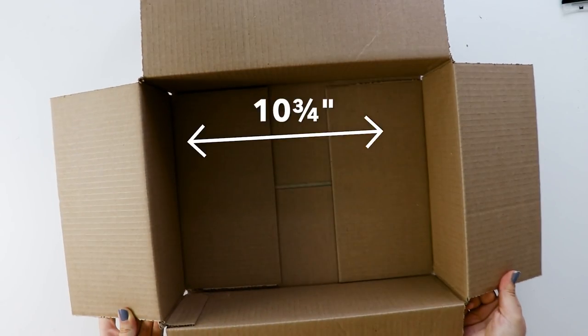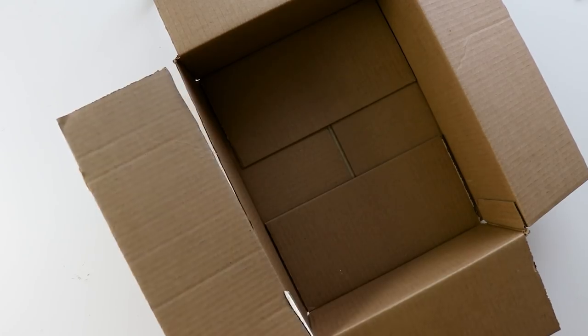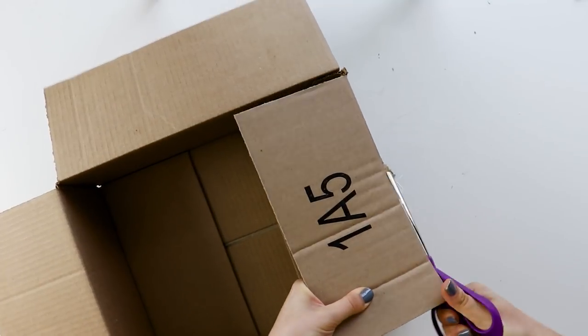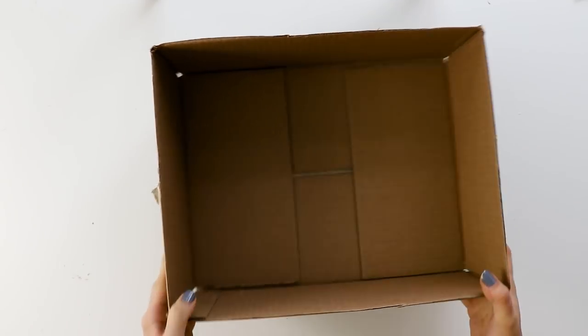We're going to start with a cardboard box. Mine measures 10 ¾ inches by 13 ½ inches by 4 ¾ inches. Yours doesn't have to be exactly the same, but that's what I'm working with. Begin by cutting off all of the flaps from the top of the box.